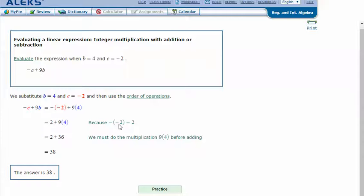The opposite of negative 2 is positive 2. So now we have 2 plus 9 times 4. 9 times 4 is 36. 2 plus 36 is 38.